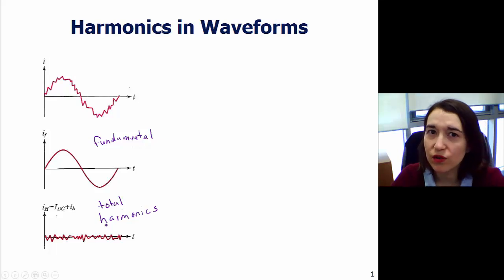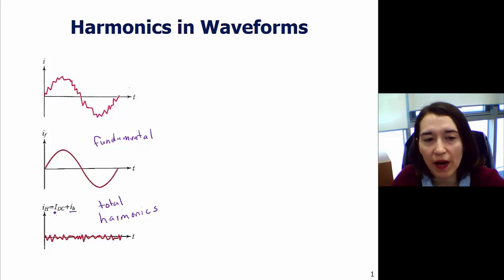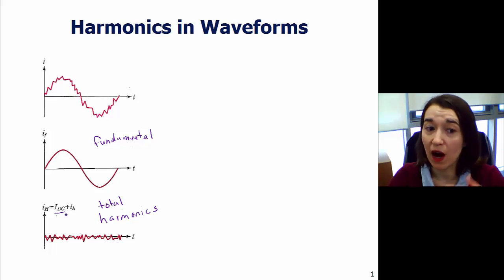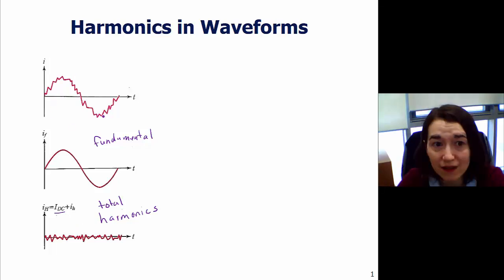Harmonics we usually think of as higher frequency signals. In that case it's captured as this IH here, but we also have this DC component. The DC component could be the offset. In this picture it's not shown, but it is included in the total harmonic.